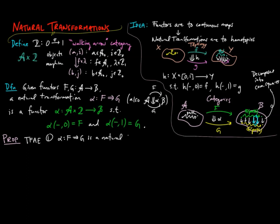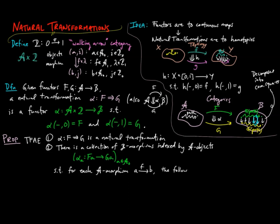One, alpha is a natural transformation. And two, there is a collection of B morphisms indexed by A objects, alpha sub A, from F to G A, where little a is an A object, such that for each amorphism F from A to B, the following commutes. Alpha sub B of F of F is equal to G of F alpha sub A.